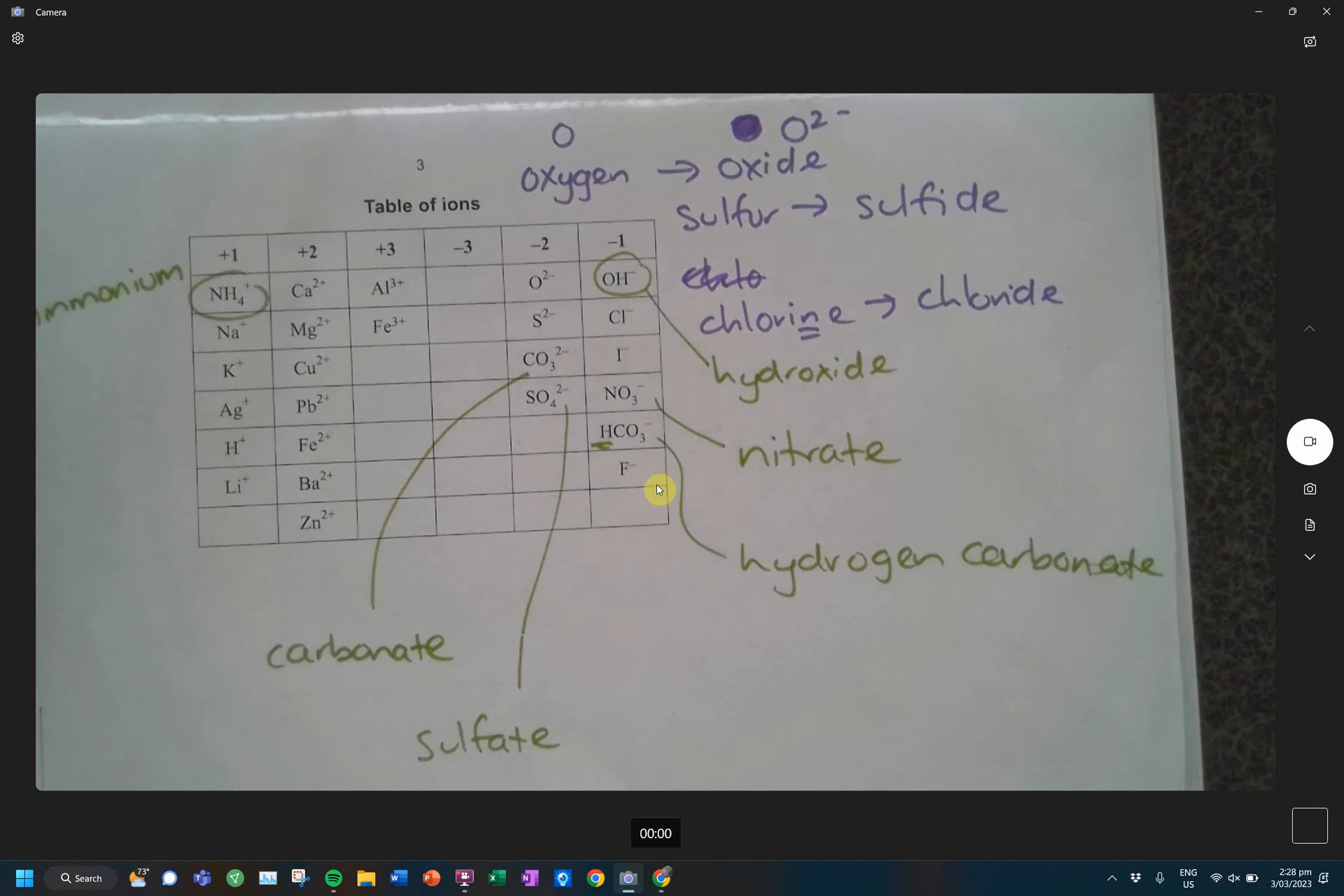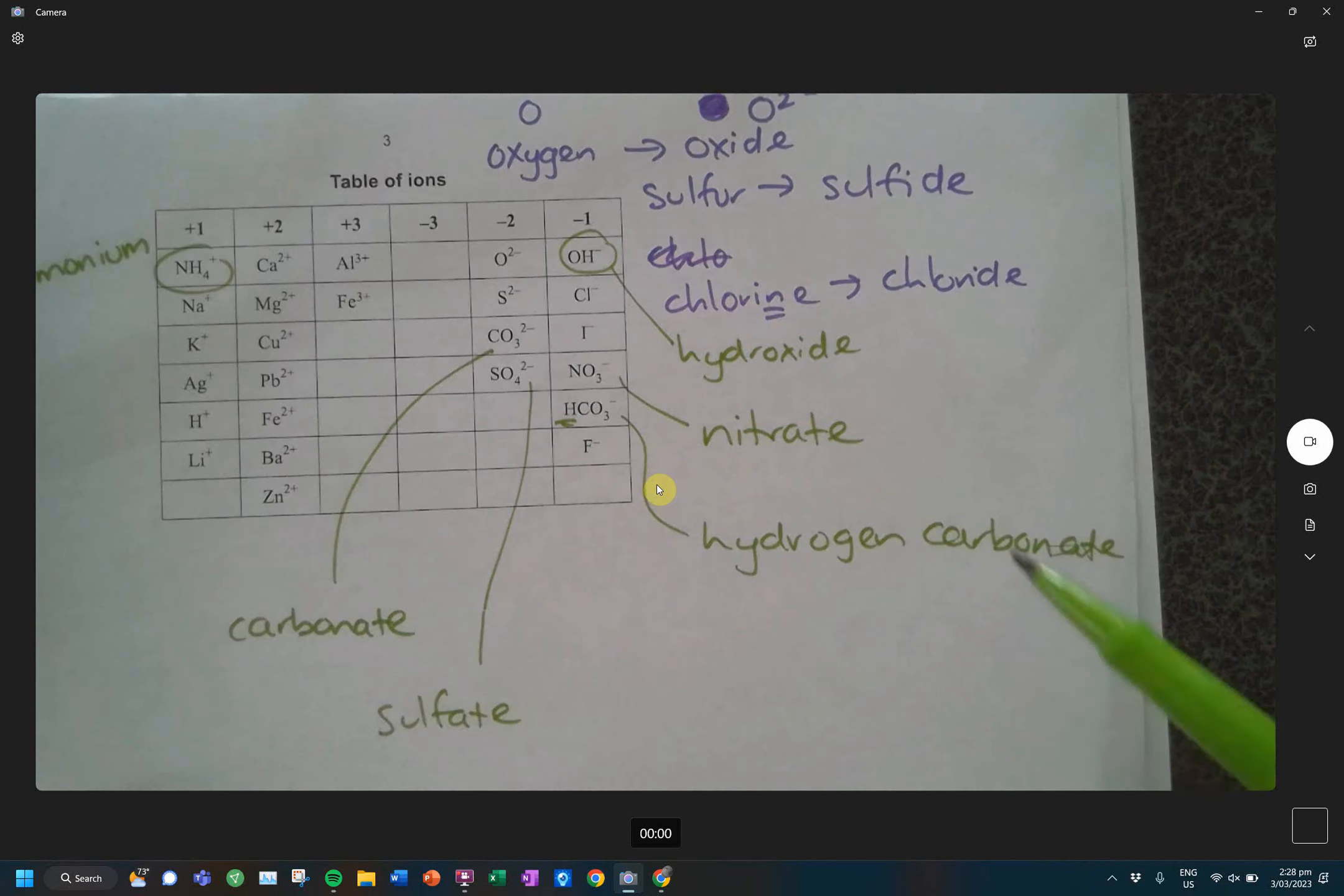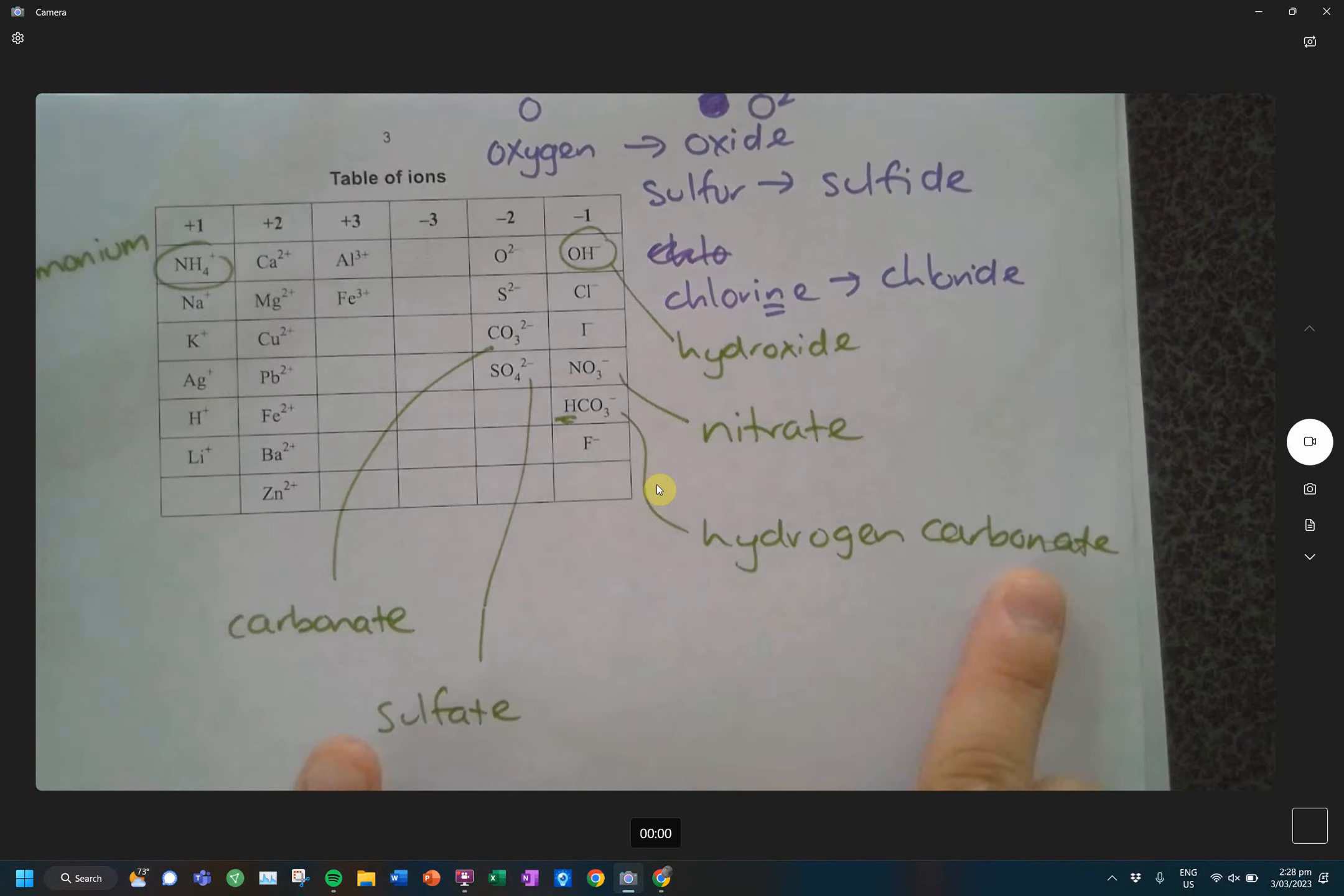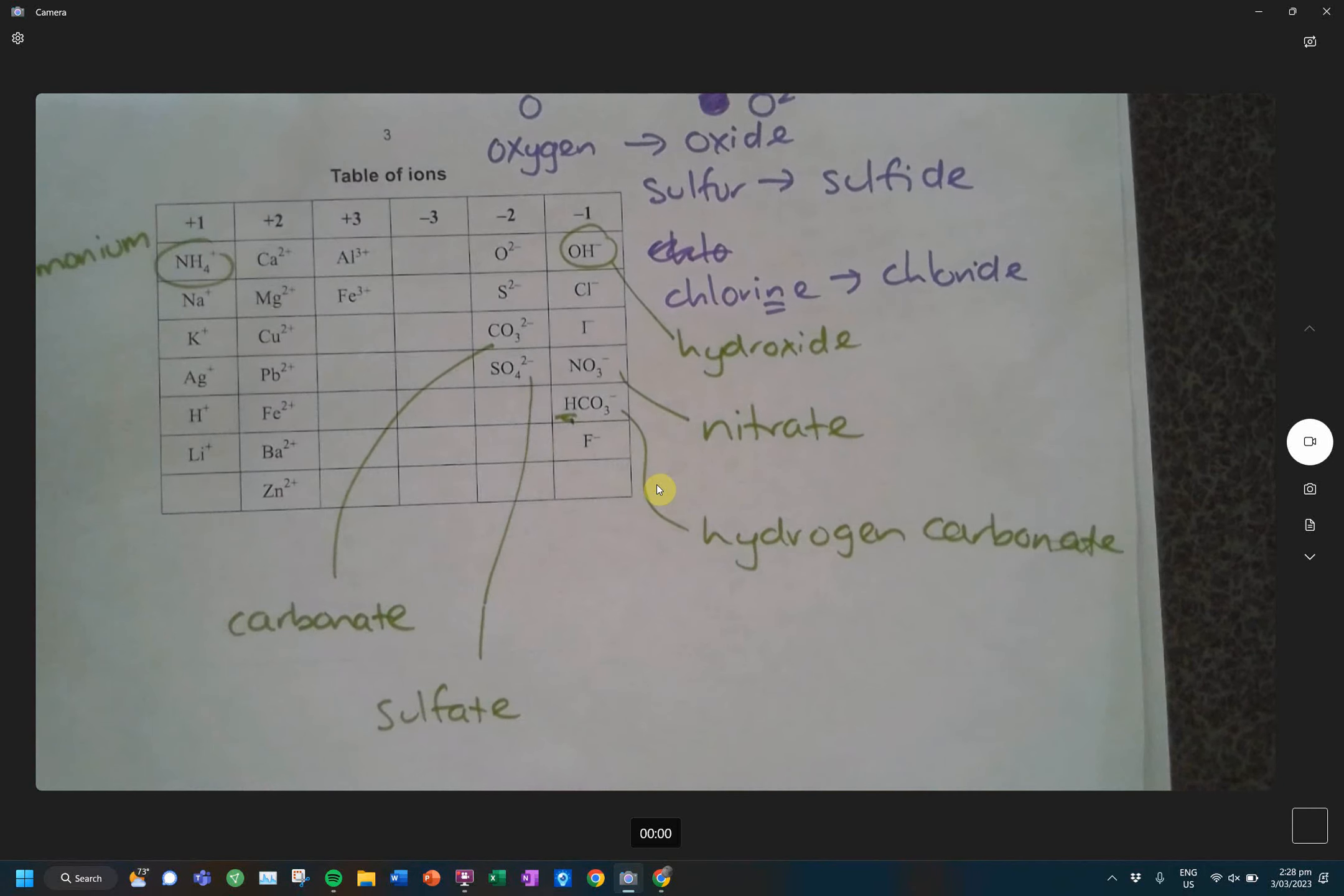There's also another name for that, and that is bicarbonate. Have you guys heard of bicarbonate? Where have you heard it from? Baking. So you ever hear of baking soda? Baking soda is sodium bicarbonate. So you're using that same chemical. The difference here is that hydrogen carbonate has an extra hydrogen to it, whereas the carbonate doesn't have it.